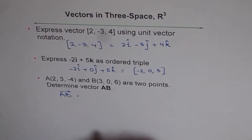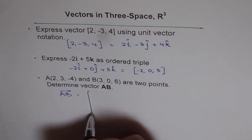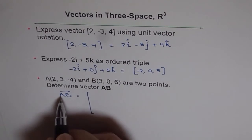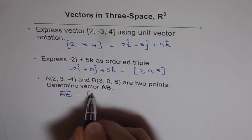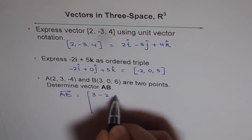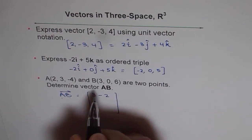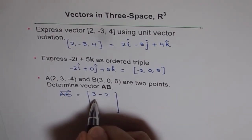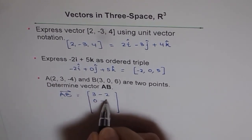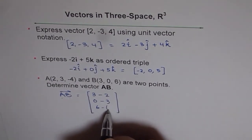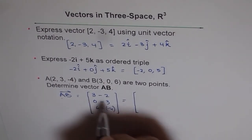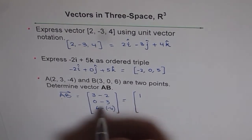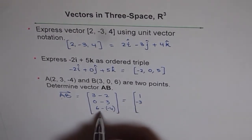I'll use the matrix way of doing things and I'll use column matrix to find vector AB. So that means b minus a. Position b is 3 for x, so there is 3 - 2. And then we have along the y-axis, 0 - 3, and 6 - (-4). And that gives us vector AB, which is 3 - 2 = 1, -3, and that is 10.